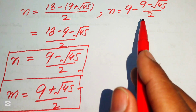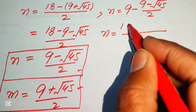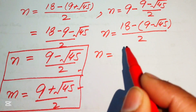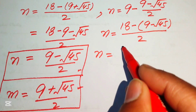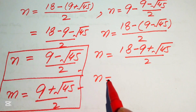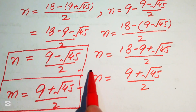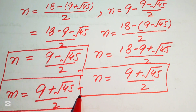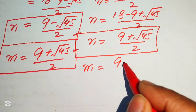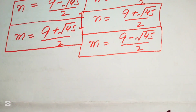Taking the LCM of 2, we have 18 minus (9 minus square root of 45) divided by 2. Multiplying the negative sign through gives 18 minus 9 plus square root of 45, all divided by 2, so n equals (9 plus square root of 45) divided by 2. This corresponds to m equals (9 minus square root of 45) divided by 2.